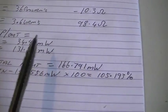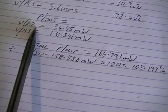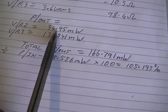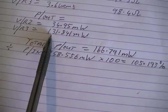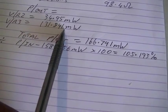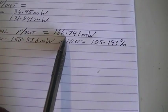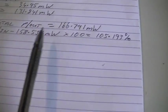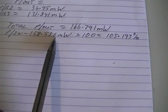So our power out across R2, we're dissipating 34.95 milliwatts. And across R3, we're dissipating 131.841 milliwatts. So the total power out is 166.791 milliwatts. And our power in is 158.556 milliwatts.